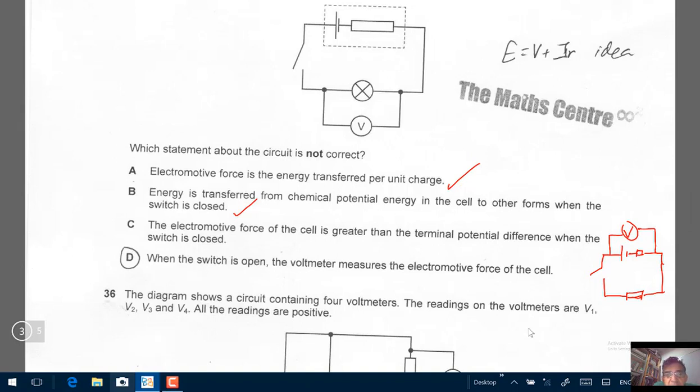Both A and B are ideas from EMF. When we study EMF, we talk about these things. C, the electromotive force of the cell is greater than the terminal potential difference when the switch is closed. Also correct. Remember this idea?